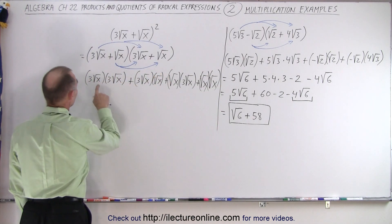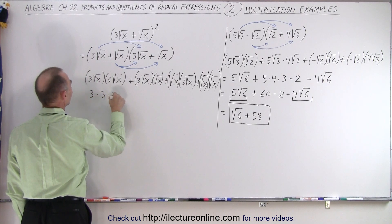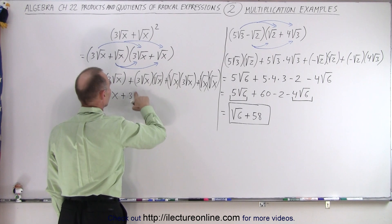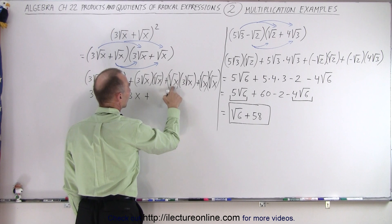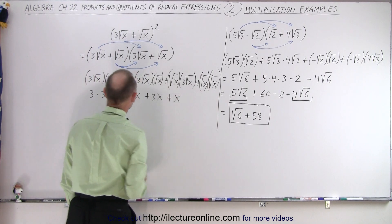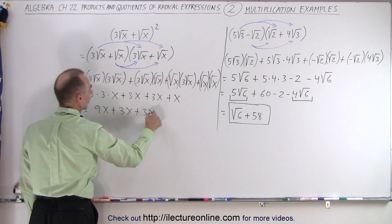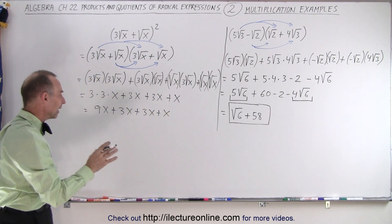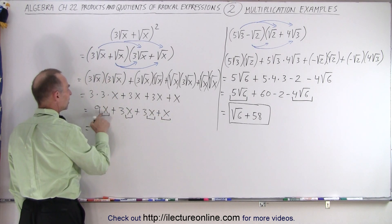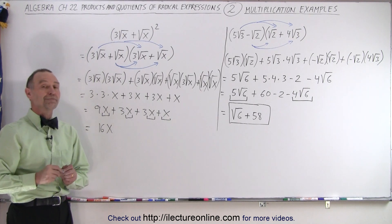Now let's clean things up. The square root of x times the square root of x simply gives x, so we have three times three times x, which is 9x. Then the square root of x times the square root of x times three gives 3x. Then again 3x. And finally the square root of x times the square root of x is simply x. So we have 9x plus 3x plus 3x plus x — four like terms. Adding: 9 plus 3 is 12, plus 3 is 15, plus 1 is 16, giving us 16x. That is the result of that product.